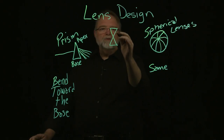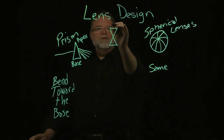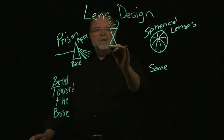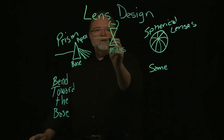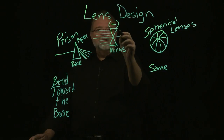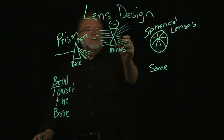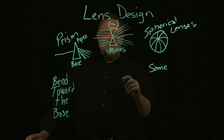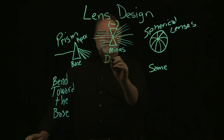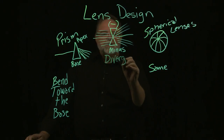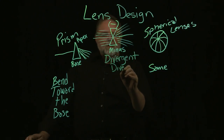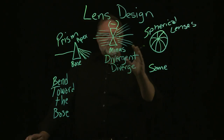If you have two prisms apex to apex, you have a minus lens. As light comes through it, it's going to bend the light rays towards the base, so it scatters light. A minus lens is divergent — the light rays diverge and scatter.